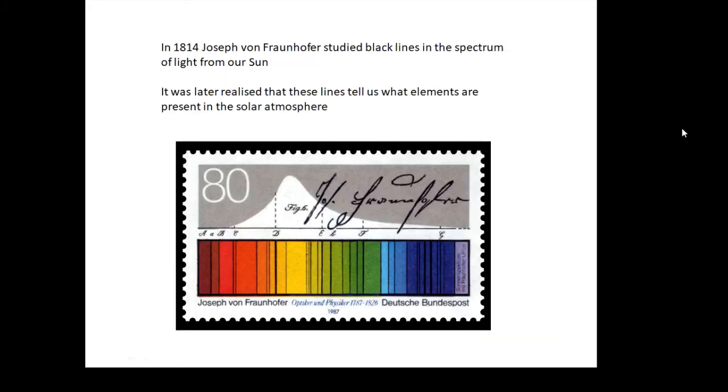In 1814, Joseph von Fraunhofer found these black lines in the spectrum of light from our Sun. He studied them and made lots of measurements. Later on it was realized that these black lines in the spectrum of our Sun tell us what elements there are in the atmosphere of the Sun, which was how helium was discovered.